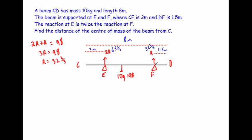You could take moments about F in a similar approach - that means you could ignore that moment and you'd be left with the other two. Again you'd label the distance to the centre of mass as X and find that, but remember you're asked for the distance from C. So let's take moments about point C.